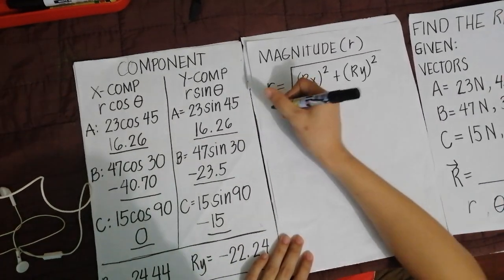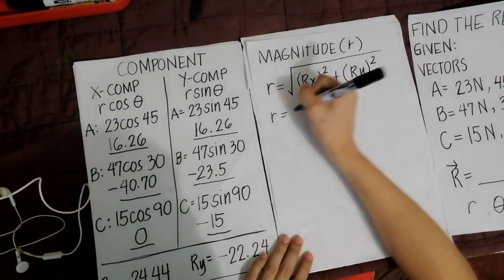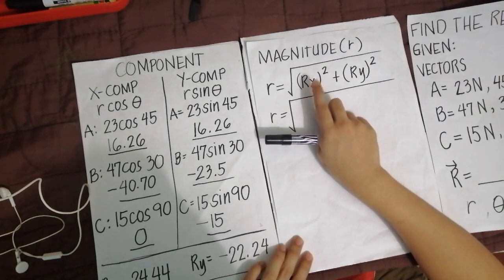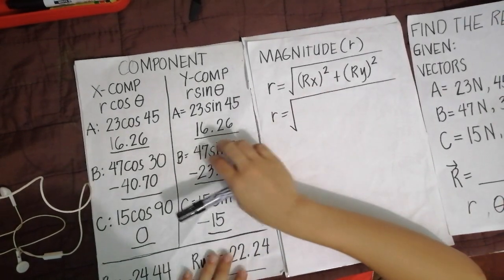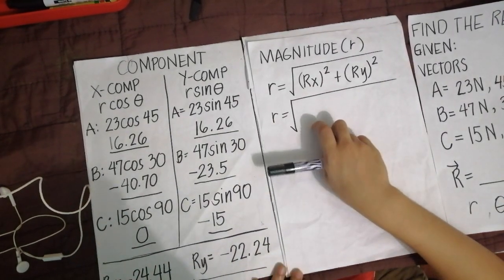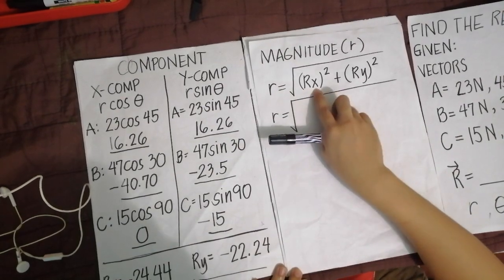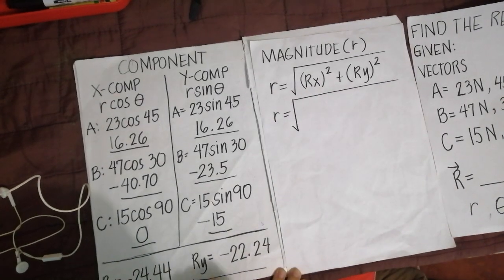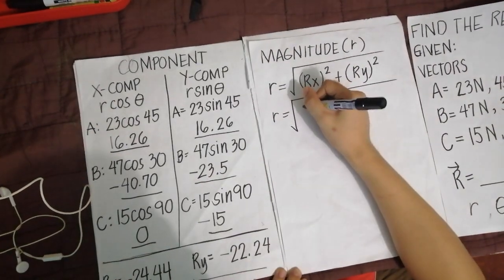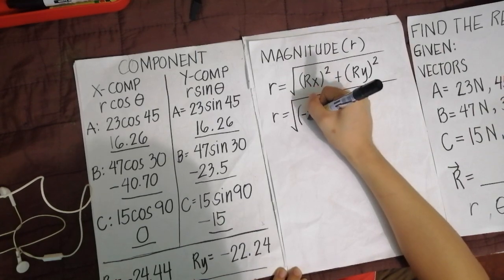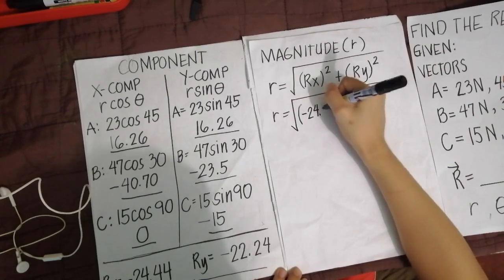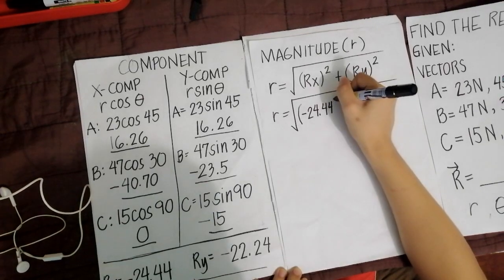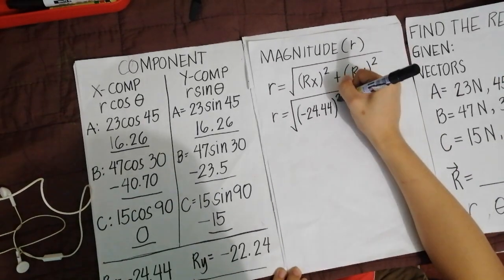So gawin natin, copy natin yung R equals square root. Yung Rx, kaya natin ginawa itong component method na ito, kasi to get the magnitude, kailangan natin yung Rx saka Ry. Kaya kailangan mong gumamit ng component method. So yung Rx natin is negative, take note, you have to include the sign. Negative 24.44. Then, close parenthesis, then huwag kalimutan yung raise to 2.